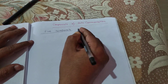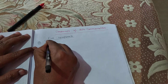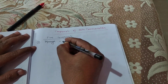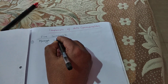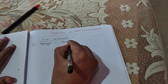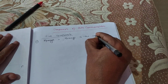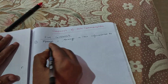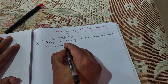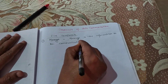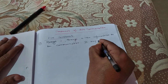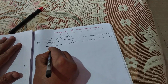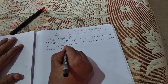The first component is message. The message is the information to be communicated. It may be text, audio, video, picture, or number.